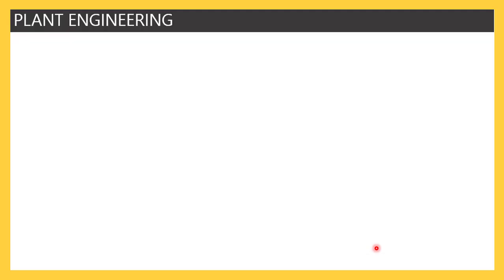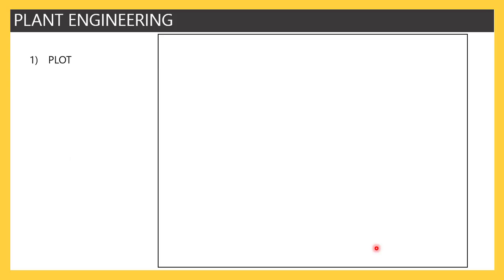Now let us go into the major plant engineering activities. The first and foremost thing is plot identification — identifying the location where we have to construct the entire plant. When an engineering company gets a project, the very first activity is to identify the plot.